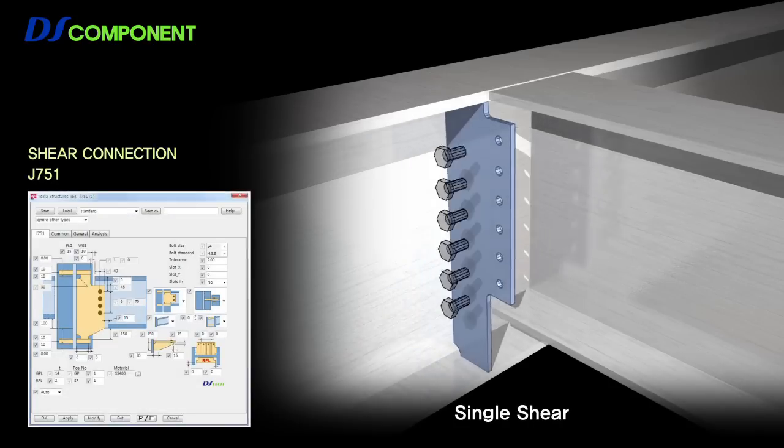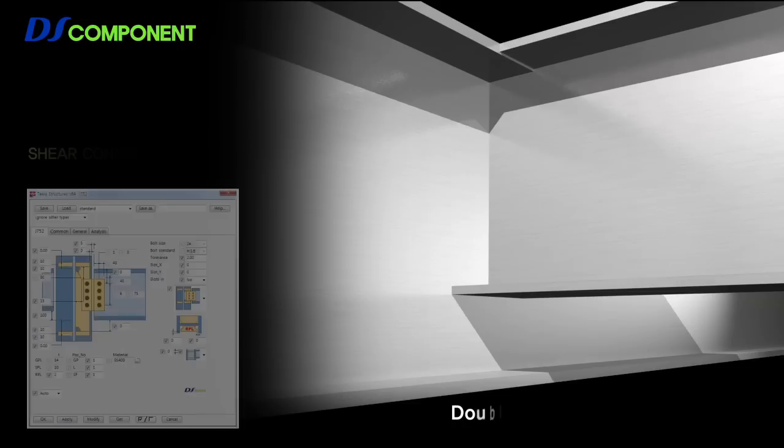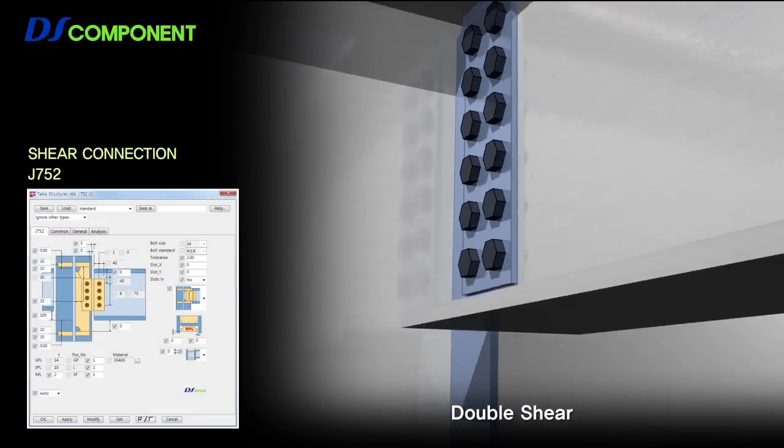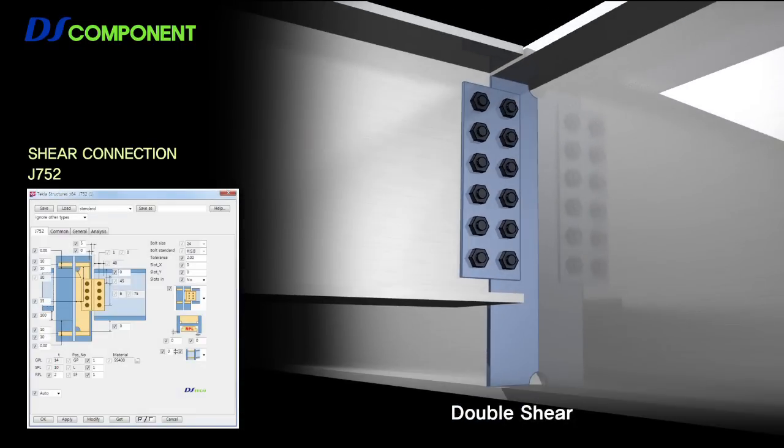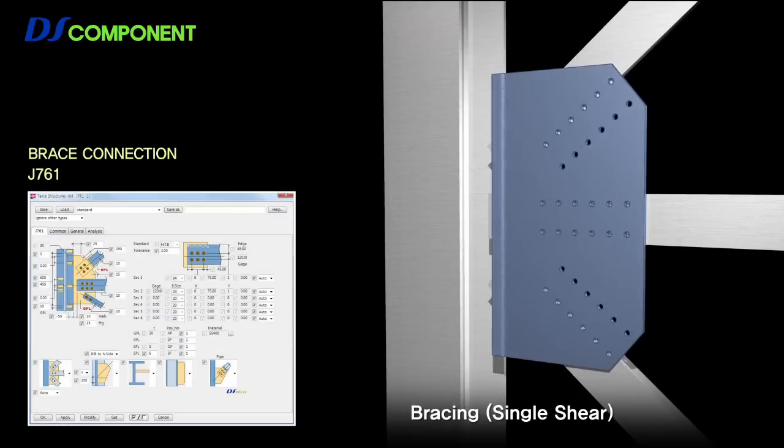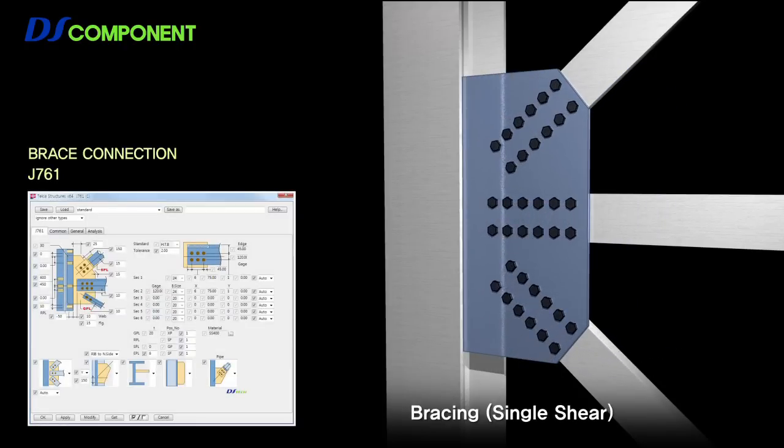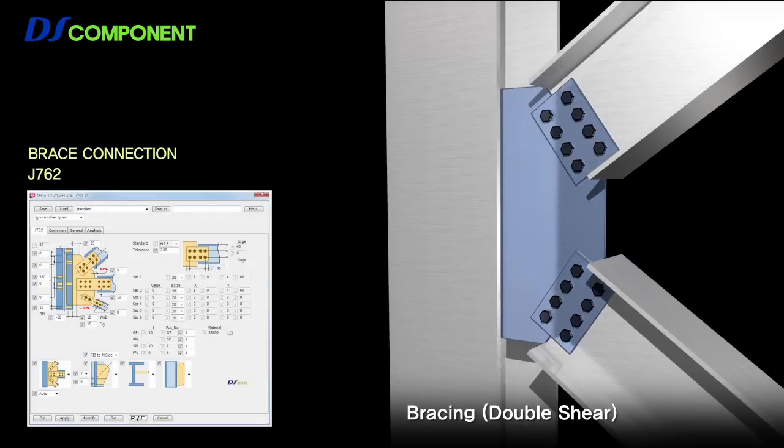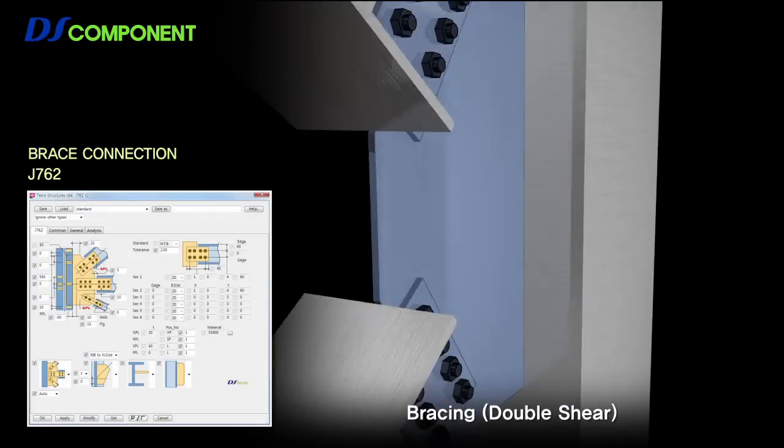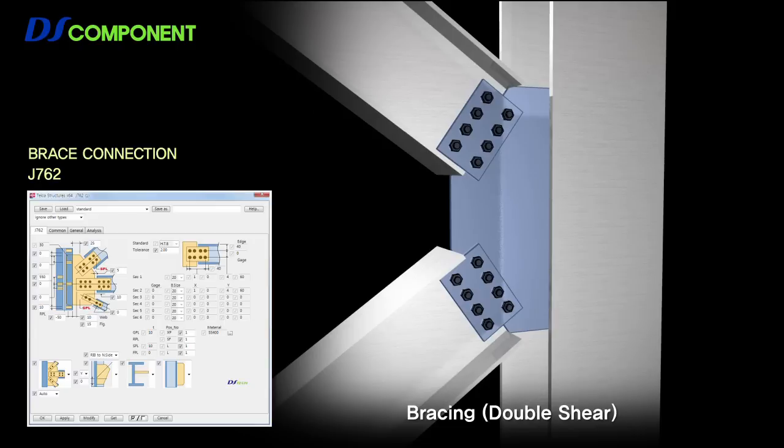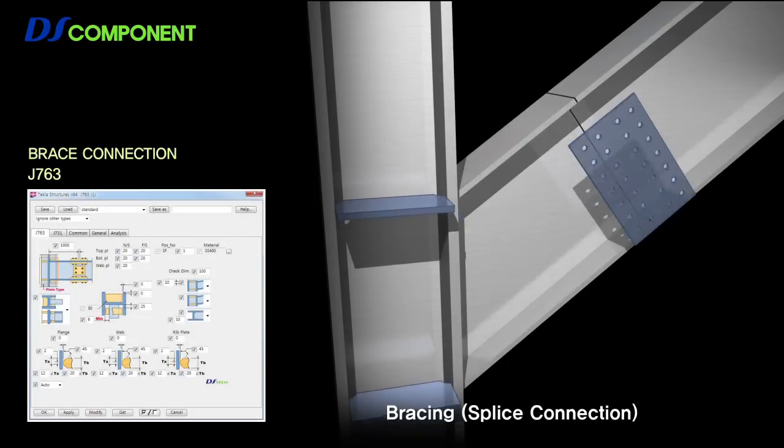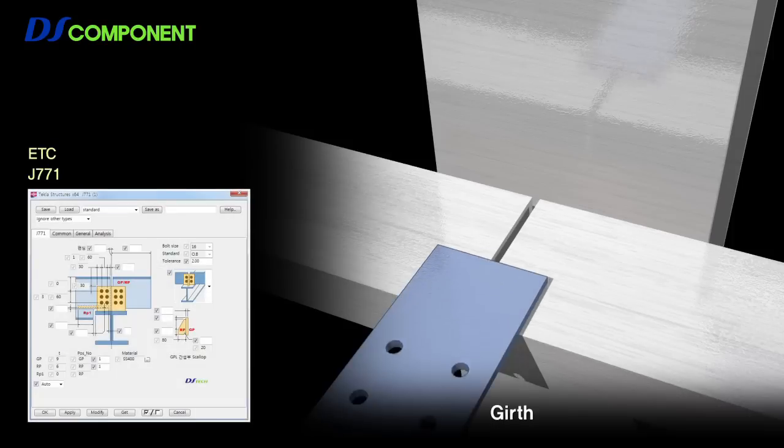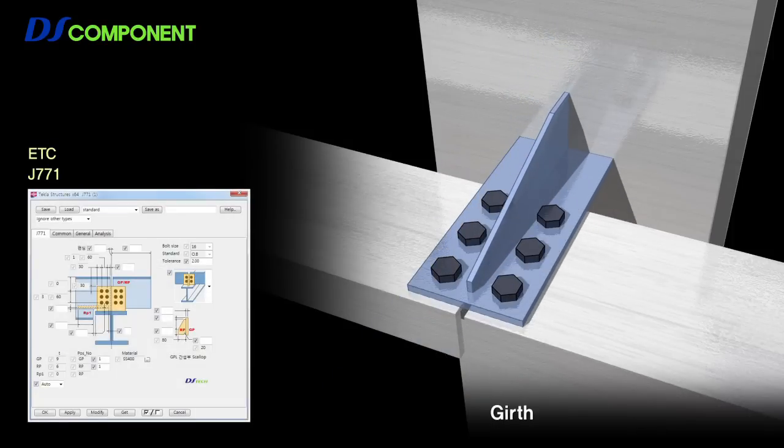Shear component can be used on single shear connection and double shear connection. Brace component is used for single shear bracing connection, double shear bracing connection, and splice bracing connection, able to create girth and purlin connection.